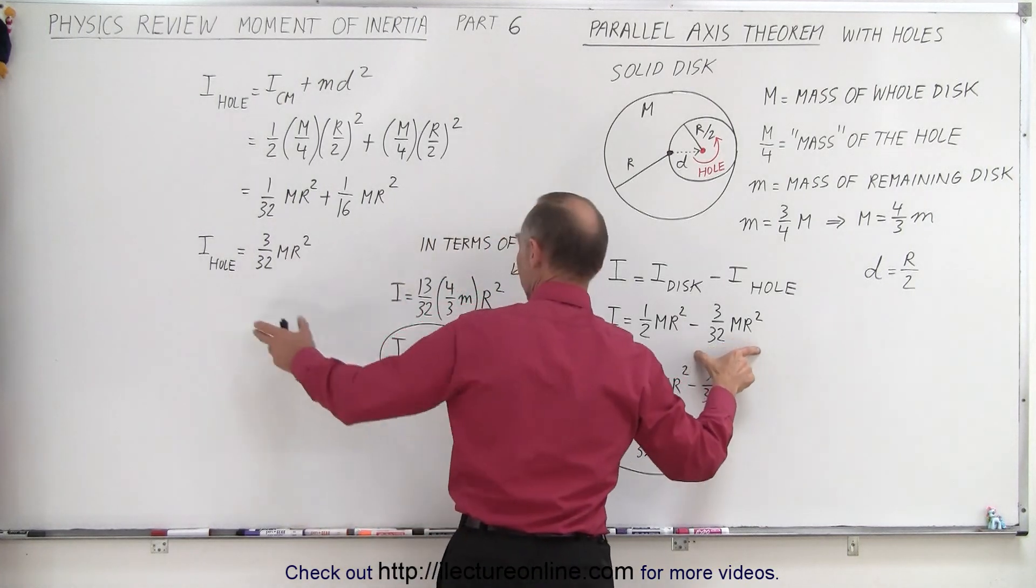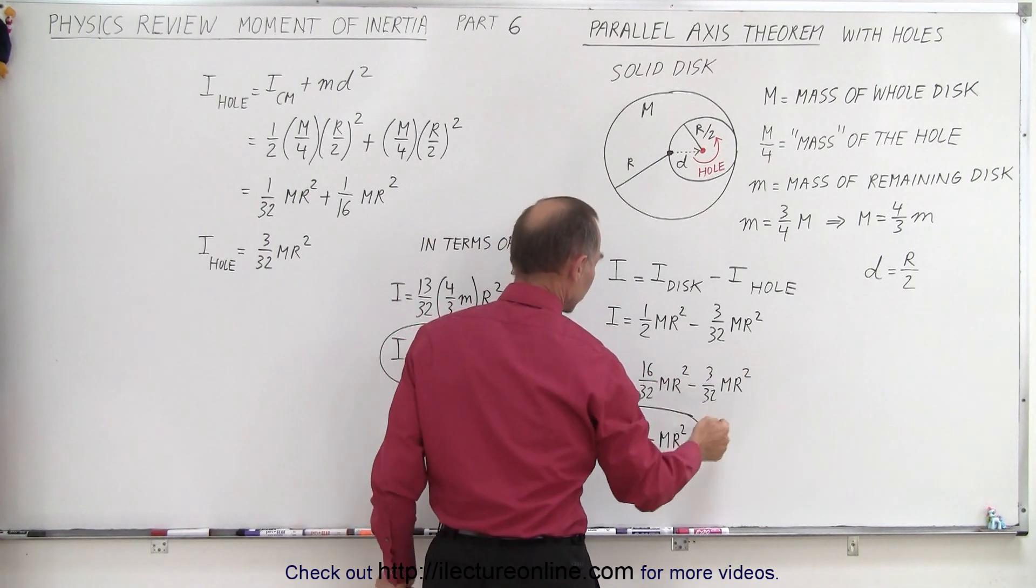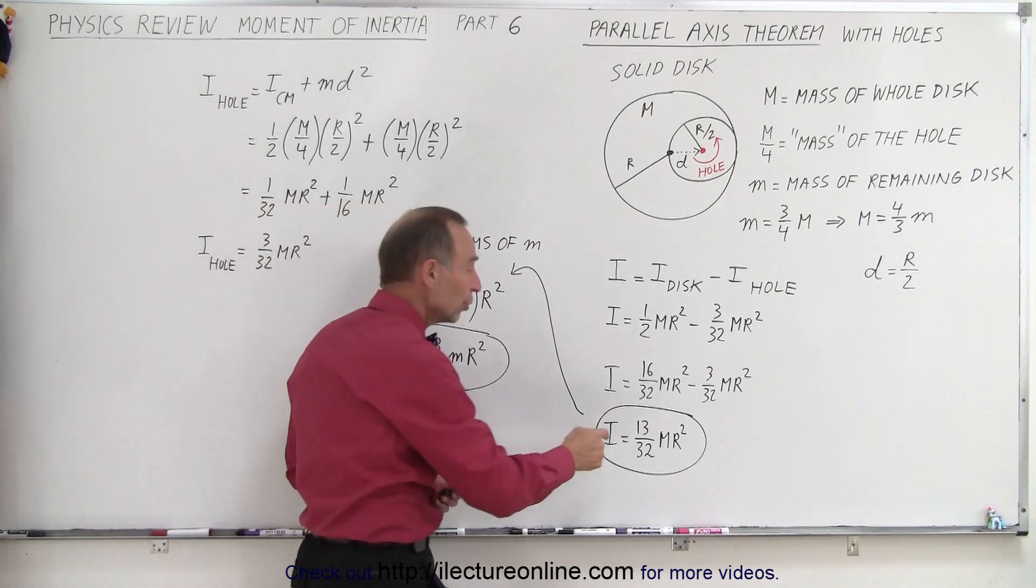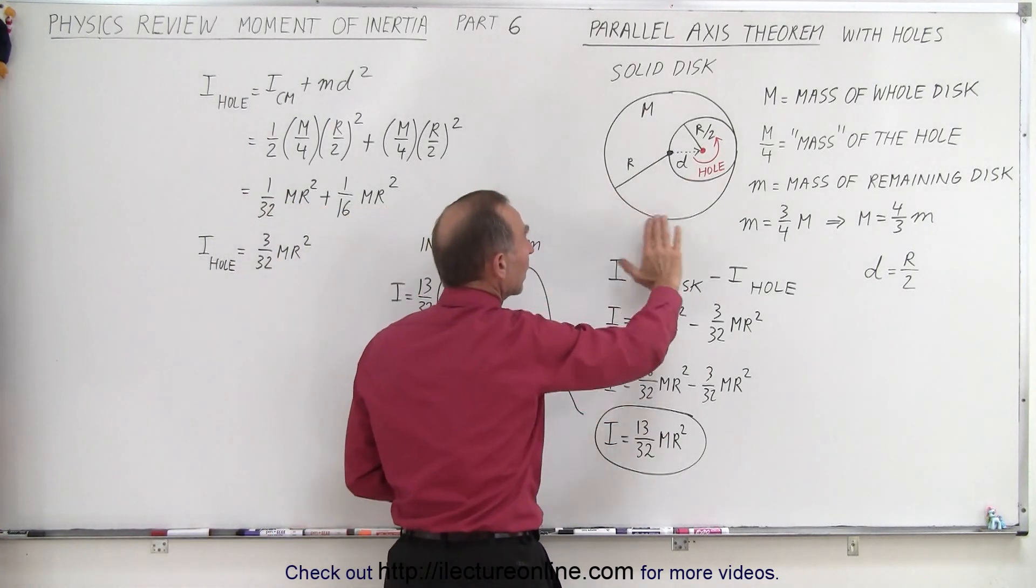So now we plug that in here. When we subtract we get 13/32 MR squared, but that's assuming we're using the mass of the whole disc without the hole.